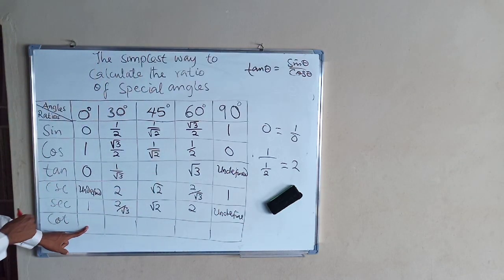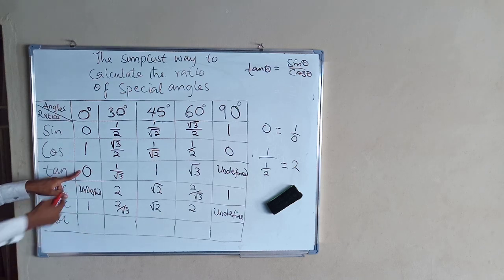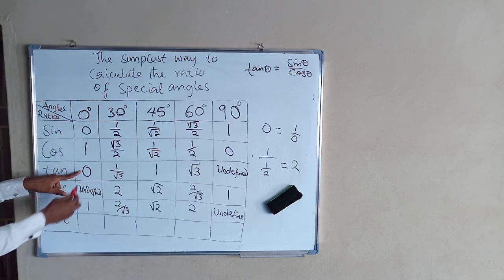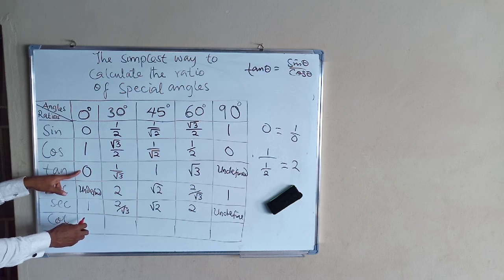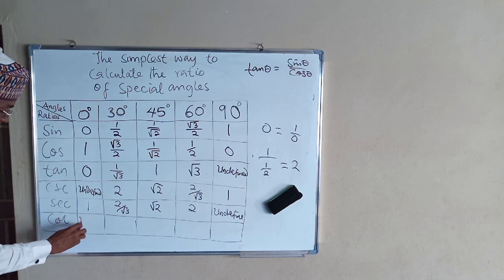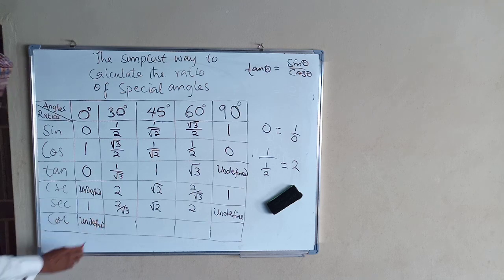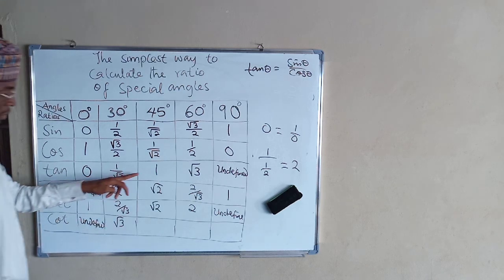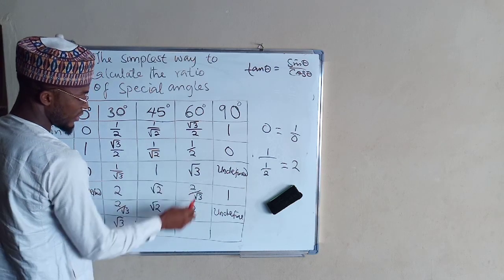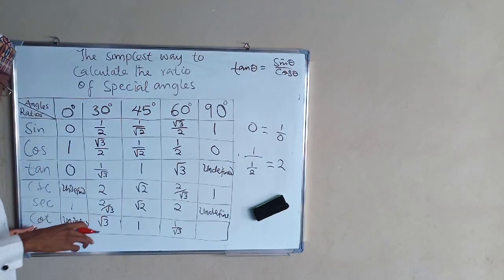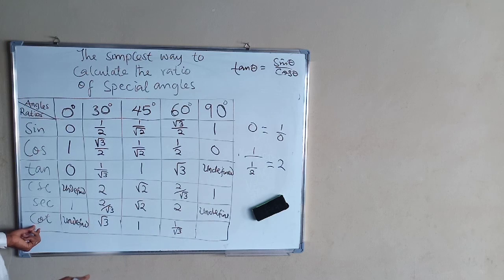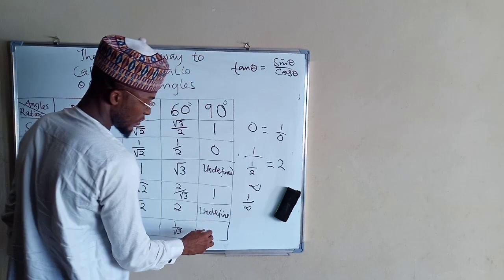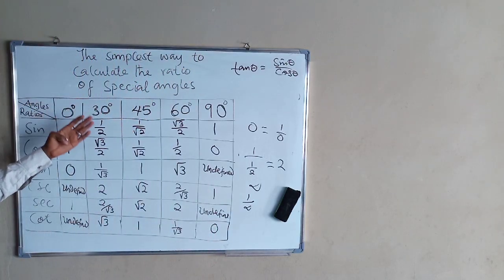Then the last row — cot of these angles — is the same as taking the reciprocal of tan. Cot 0 is 1 divided by 0, which is undefined. The reciprocal of 1 over root 3 is root 3. The reciprocal of 1 is 1. The reciprocal of root 3 is 1 divided by root 3. And cot 90 degrees is the reciprocal of undefined, which is always equal to 0. These are the simplest steps you need to take in order to find the ratios of these special angles.